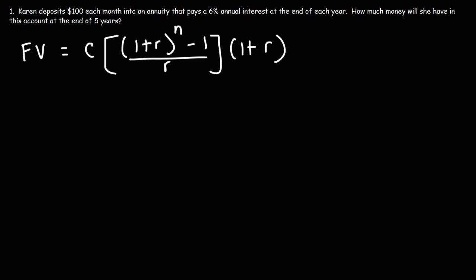In this case r is the interest rate paid on an annual basis, and because it's paid on an annual basis we're going to use n as the number of years. So we have five time periods here. C would be the amount of money she deposits on a yearly basis since n is going to be based on years.